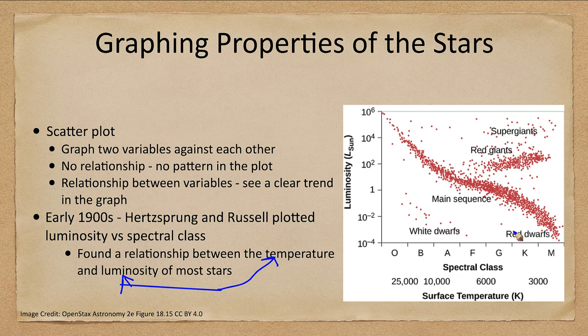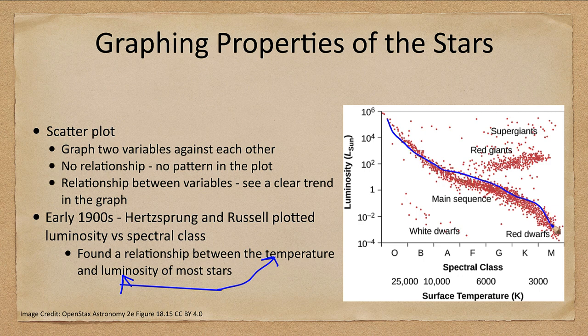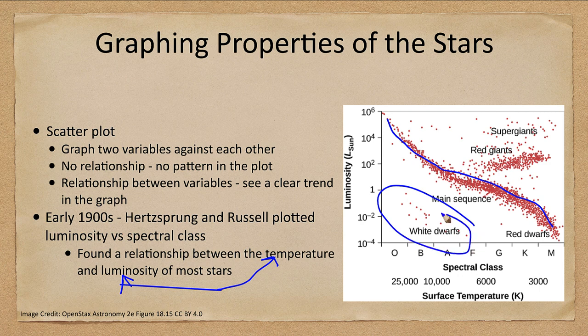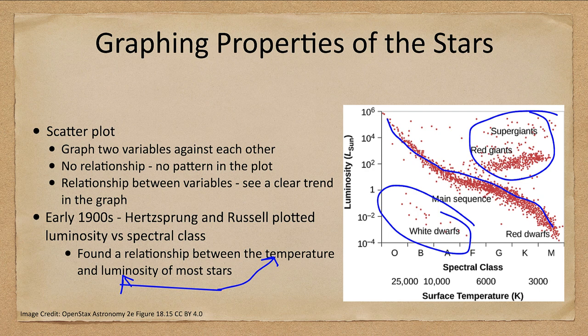And that most stars fall on what we call the main sequence going from upper left down to lower right. And while there are scattered stars down below and up above, there are a much smaller percentage of the overall stars.